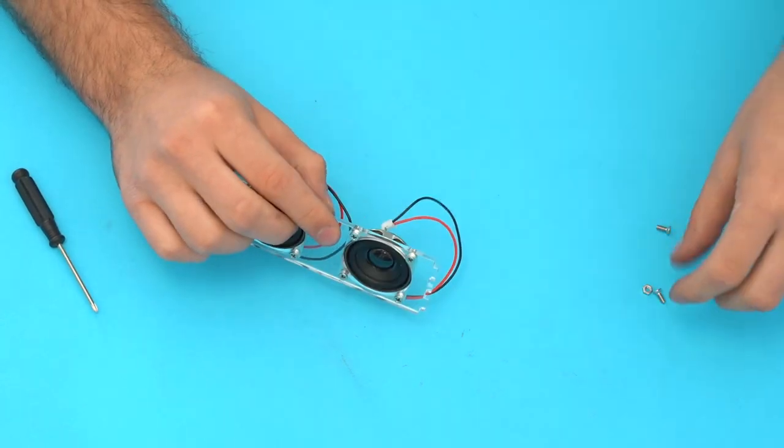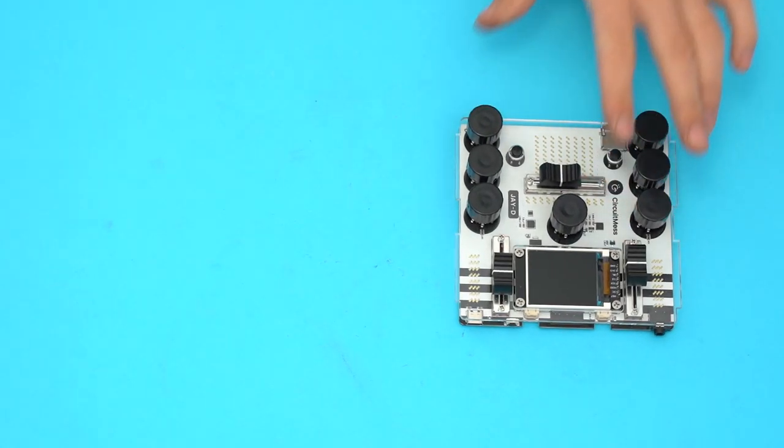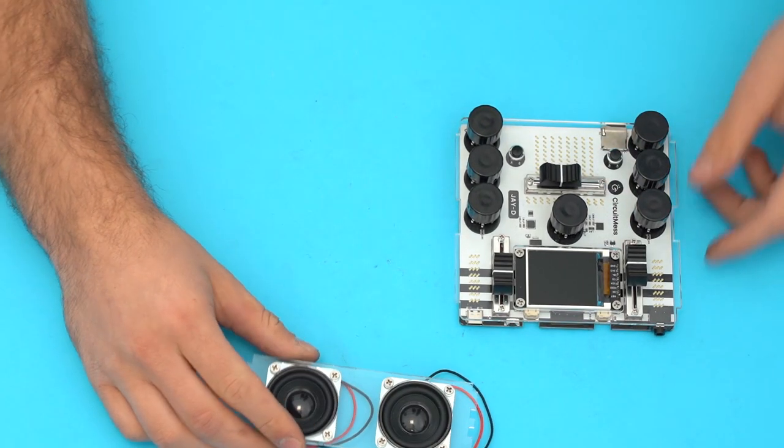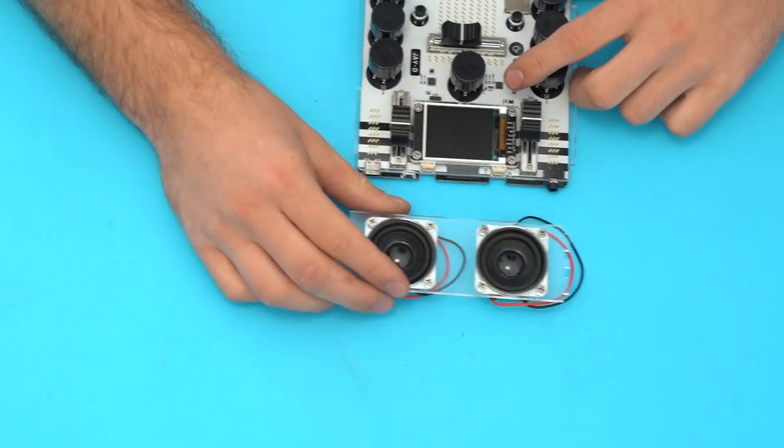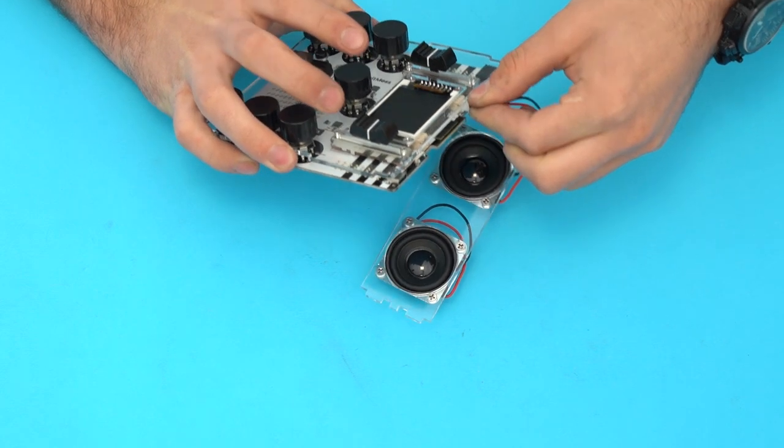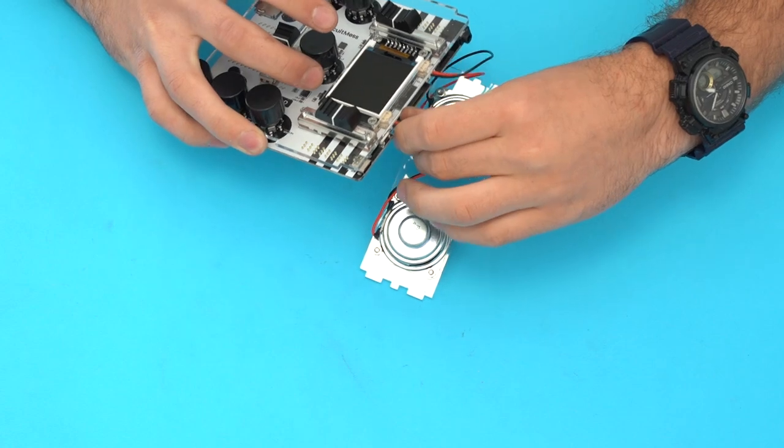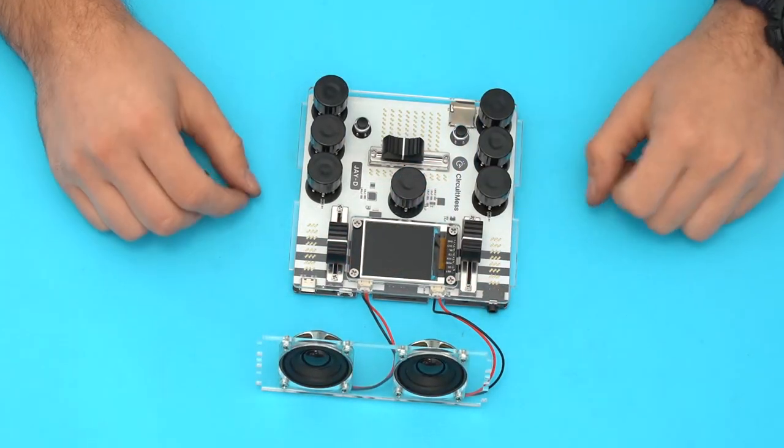Okay, the speakers are looking good. Next take the main board along with the speakers. We're going to connect them to the main board. Connect the left and right speakers accordingly to the connectors on the main board. We're done with that for now.